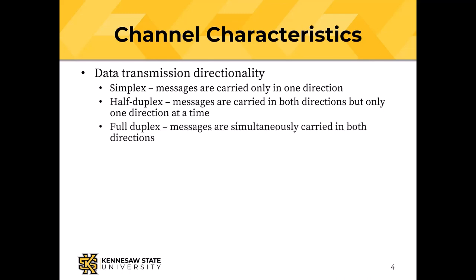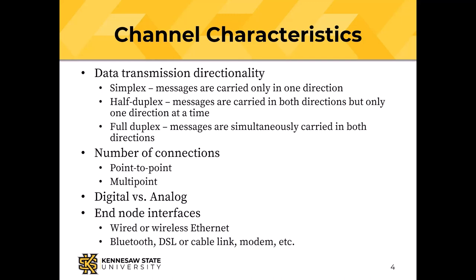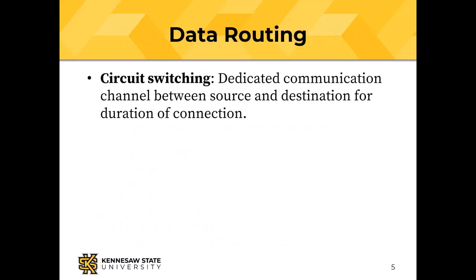Full duplex allows simultaneous messages in both directions. Channels can be point-to-point or multi-point, digital or analog. The interfaces at the ends are part of a channel's characteristics — wired Ethernet, wireless Ethernet, Bluetooth, DSL, and others.